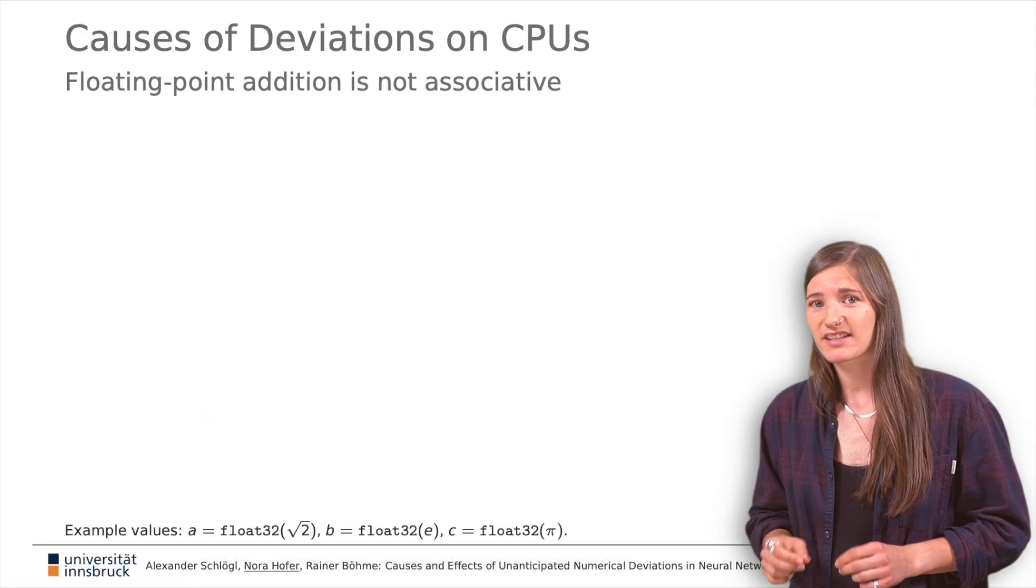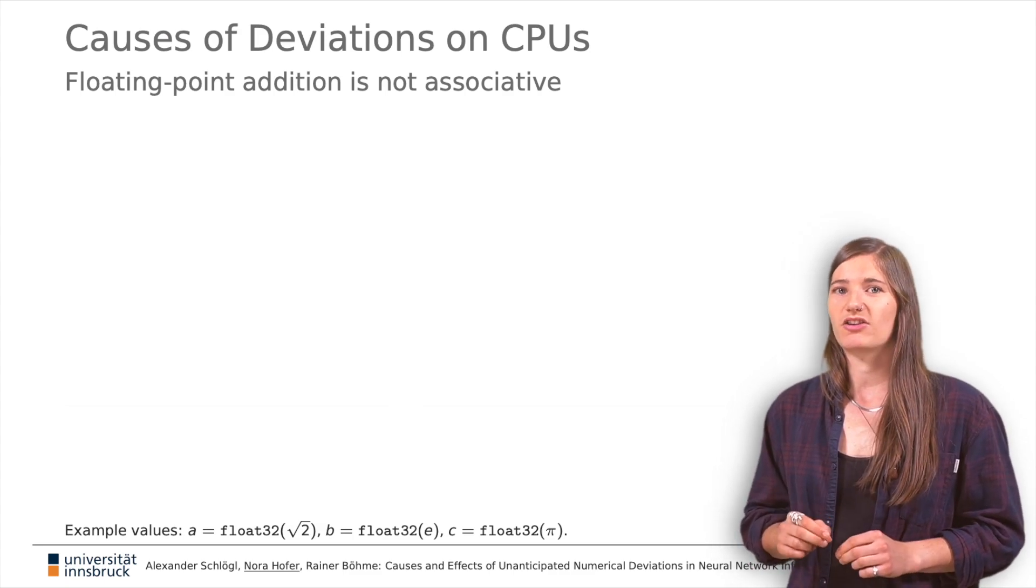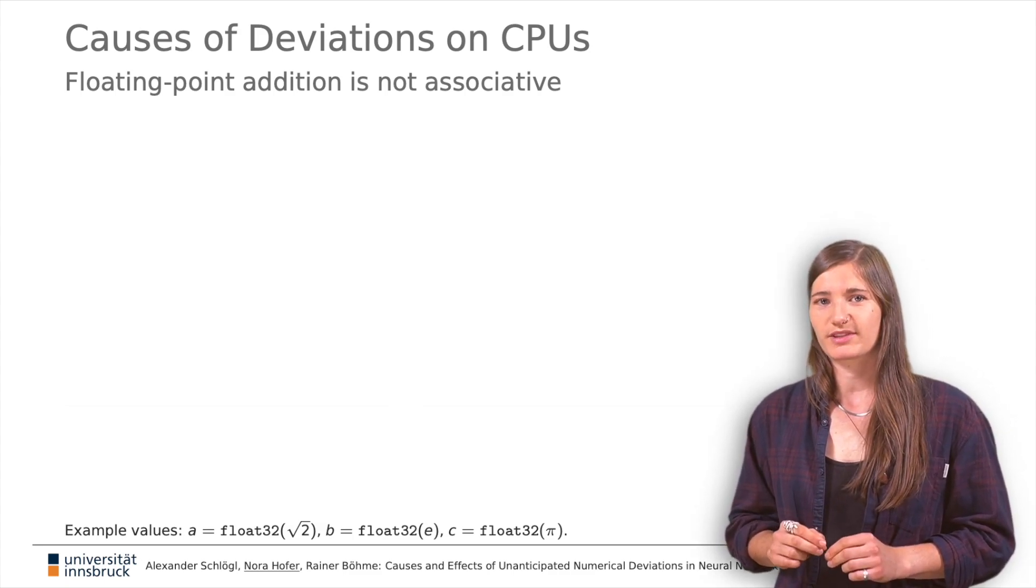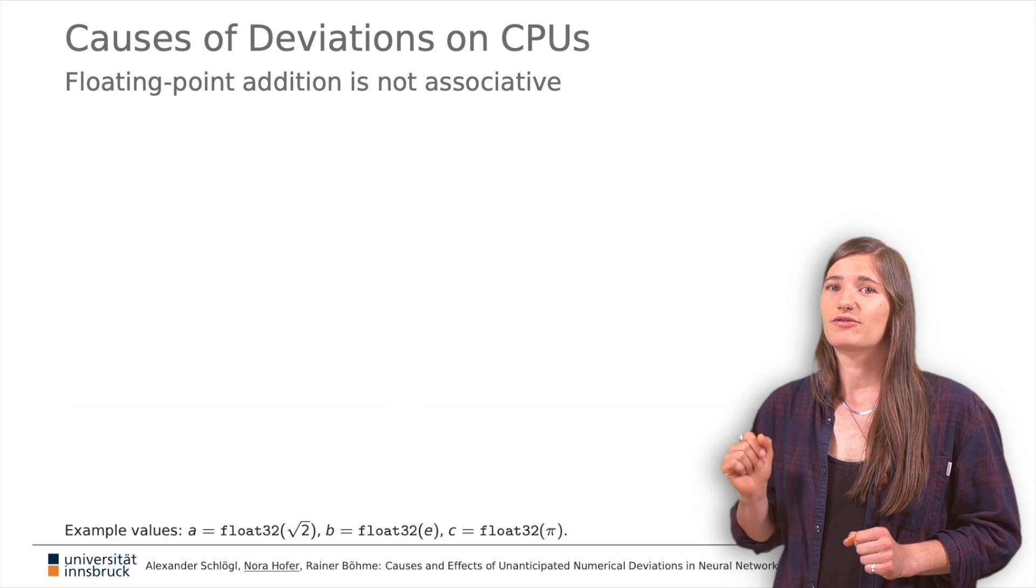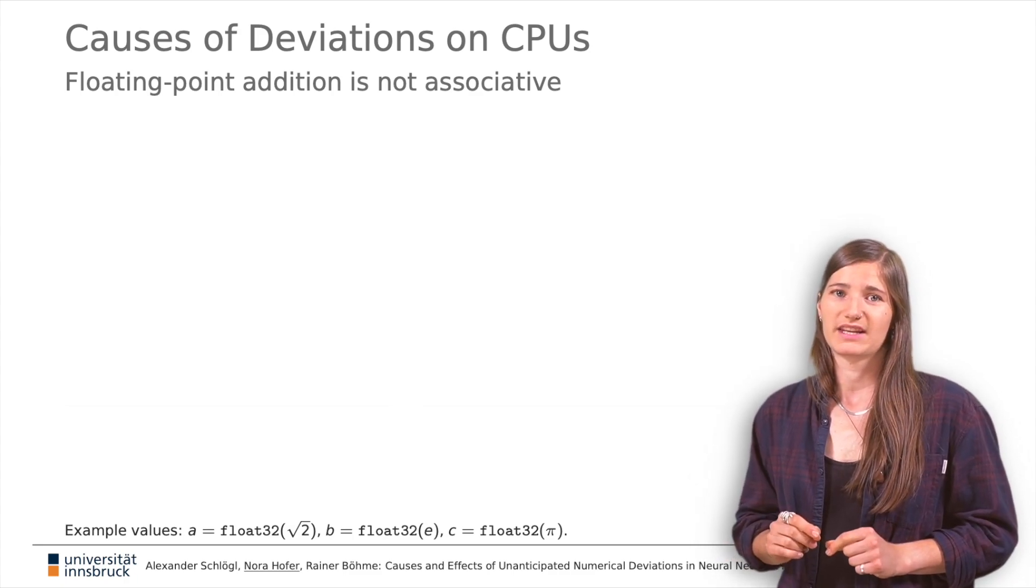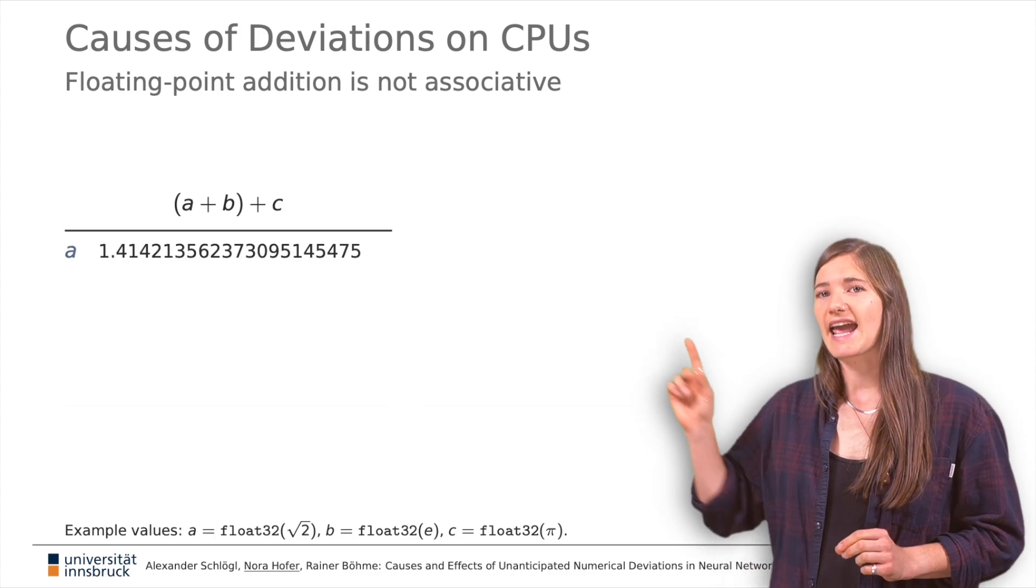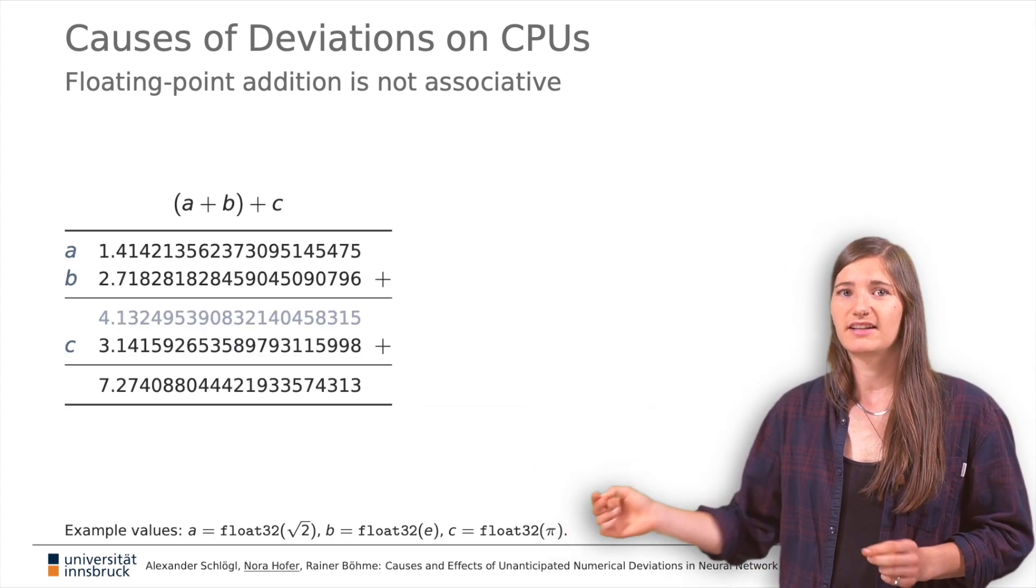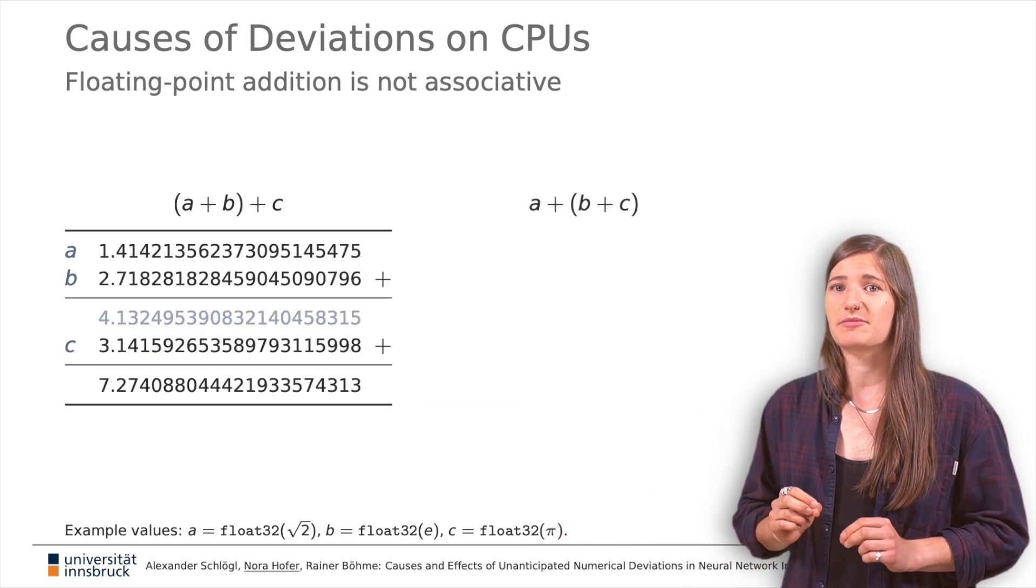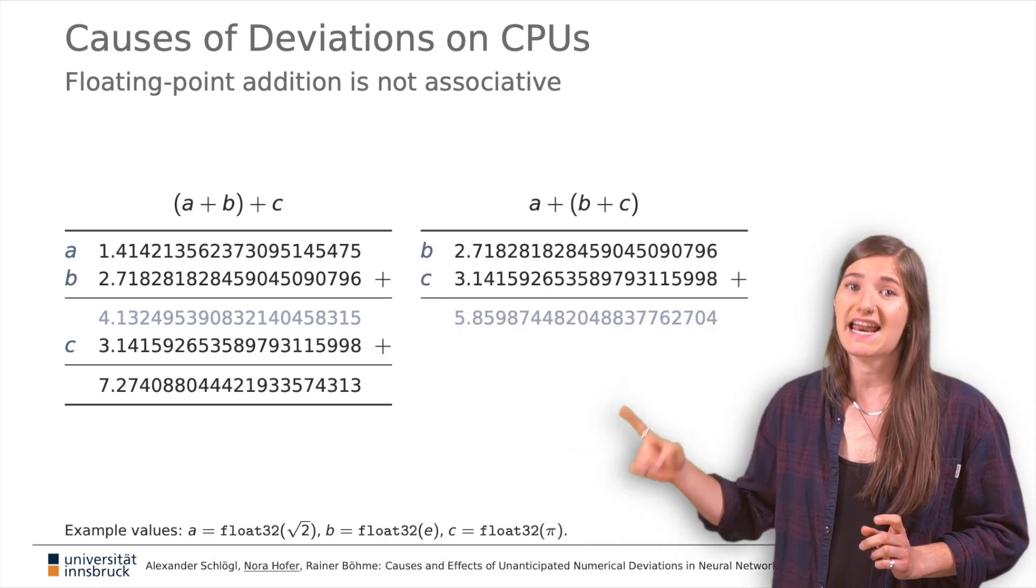On CPUs, the order of aggregation is a major cause of deviations between platforms. Recall that floating-point operation is not associative. This means if you calculate A plus B plus C, you may get a different result than by calculating B plus C and then A.